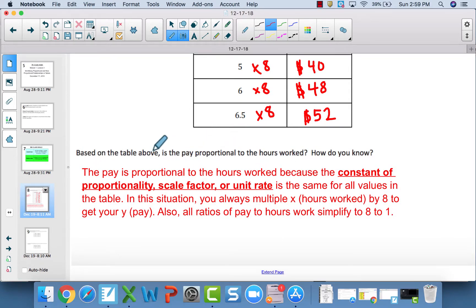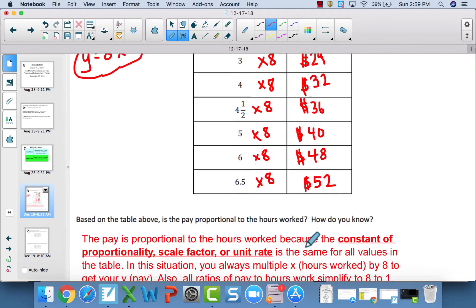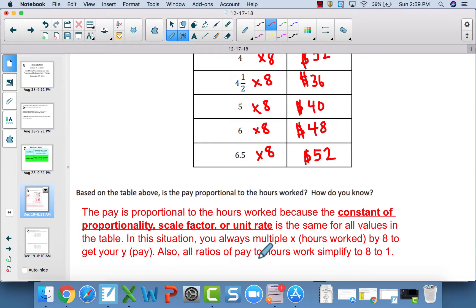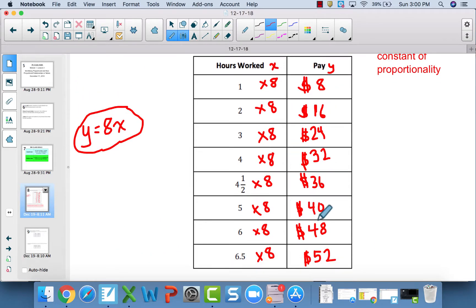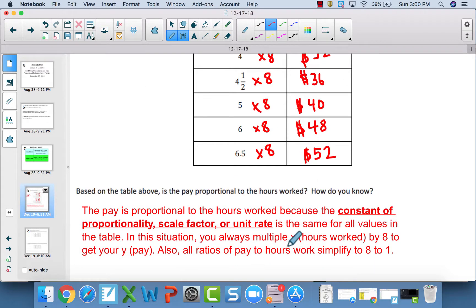Based on the table, is the pay proportional? How do you know? It is proportional because the constant of proportionality, which can also be called the scale factor or the unit rate, is the same for all values in the table. In this case, it happens to be 8. Also, all ratios of pay to hours worked simplify to 8 to 1.